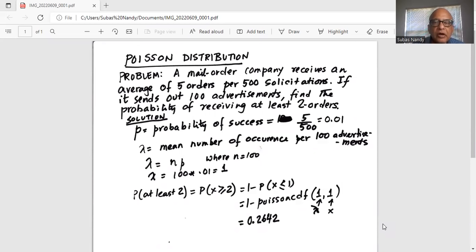A mail order company receives an average of 5 orders per 500 solicitations. If it sends out 100 advertisements, find the probability of receiving at least 2 orders.